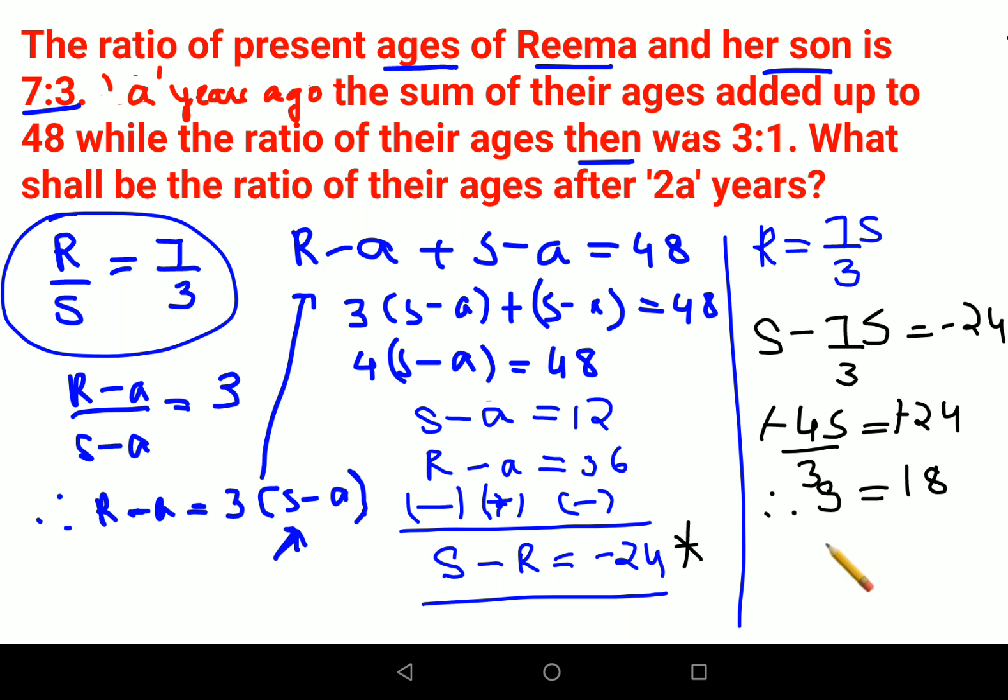Now if S is coming out to be 18, so you will put this value over here and put it in this. So you will get the value of R as nothing but 42. But your question is not ending over here. They are telling you to find the ratio after 2A years. So from here, let's put this value of R and you will find the value of A. So from here, I will say A is coming out to be 6.